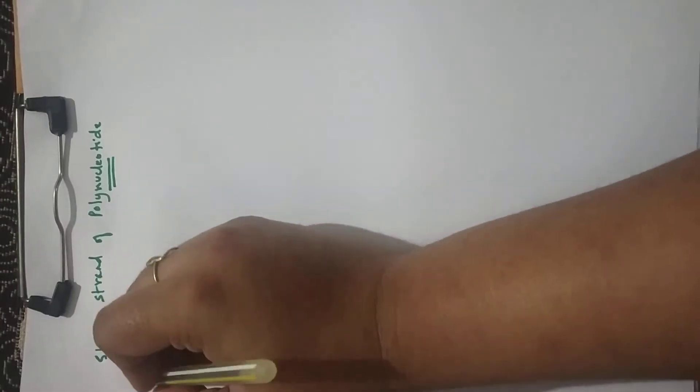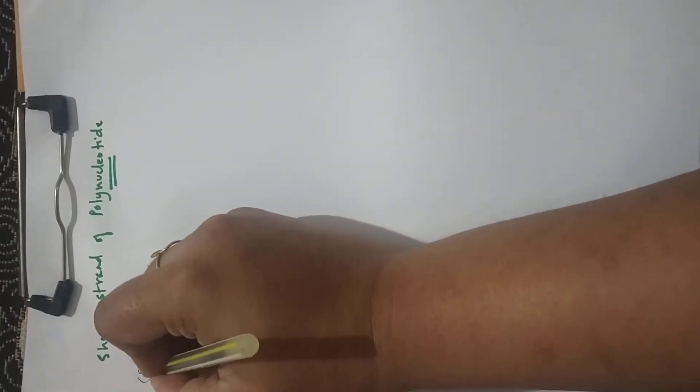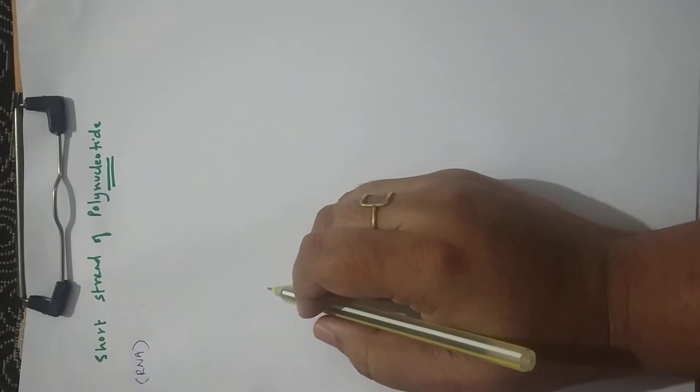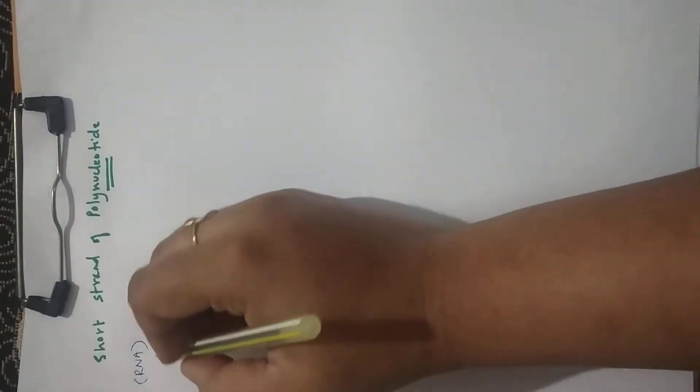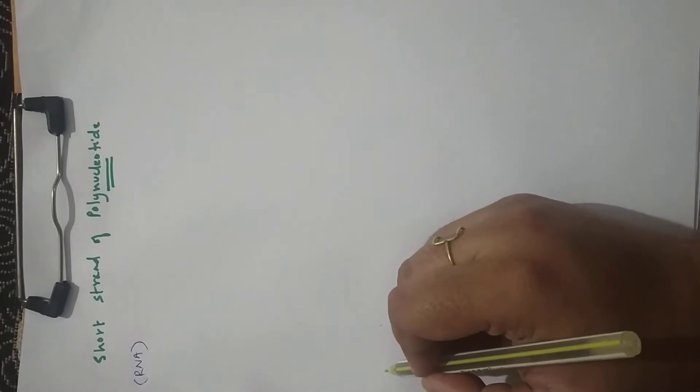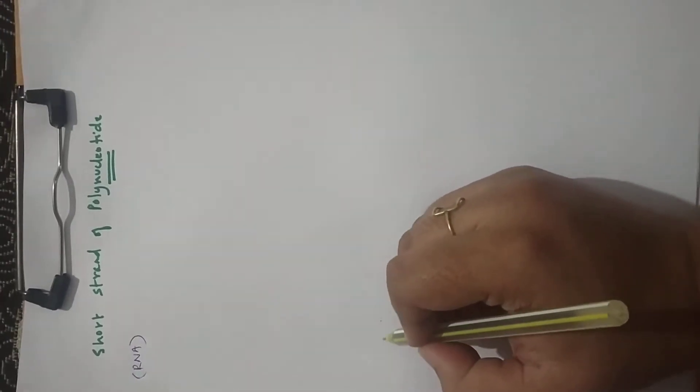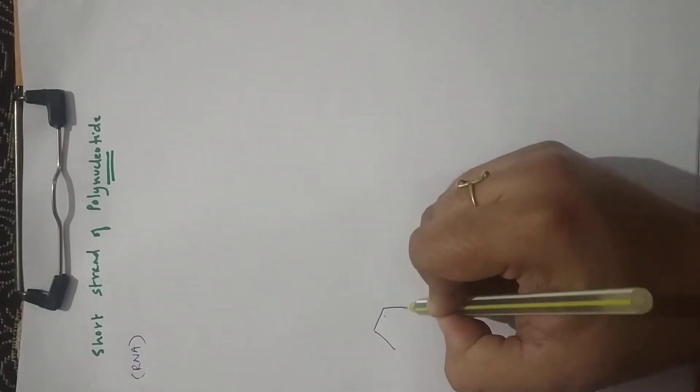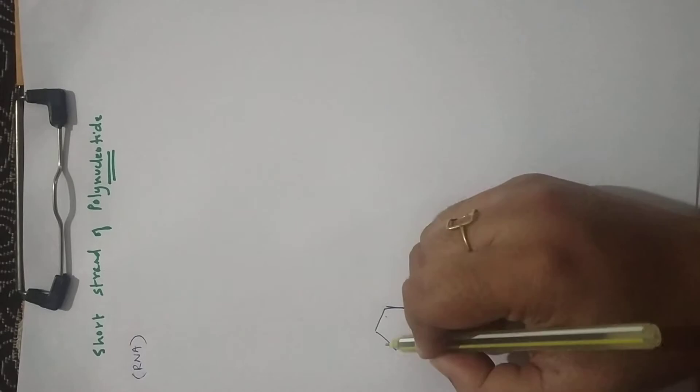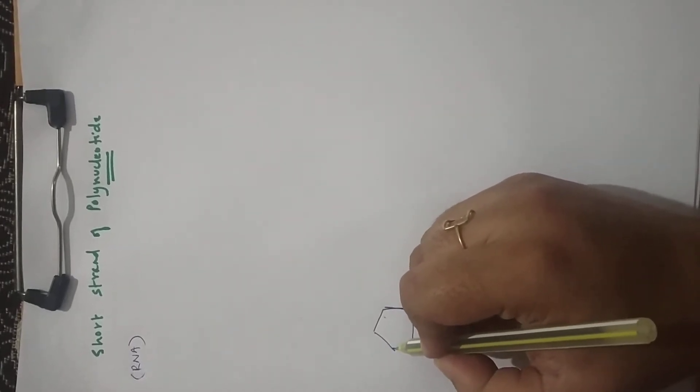So let's first draw a short strand of RNA because that's simpler, it's single stranded, so it's easy to draw. Let's start from the bottom and go way up. Every nucleotide has a pentose sugar. If this is RNA, it will have a ribose sugar.